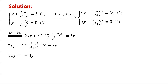So the fraction equals negative 1, and the equation becomes 2xy minus 1 equals 3y. Clearly y does not equal 0, since if y equals 0 the left-hand side is negative 1 and the right-hand side is 0, which is impossible. Rearranging and dividing by 2y, we get x equals (3y plus 1) over 2y. We label this as equation 5.